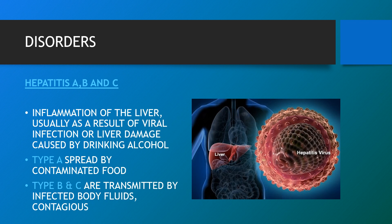Hepatitis A, B and C is an inflammation of the liver, usually as a result of viral infection or liver damage caused by drinking alcohol. Hepatitis A is usually spread by contaminated food. The most significant difference between Hepatitis B and Hepatitis C is that people may get Hepatitis B from contact with bodily fluids of a person who has the infection, while Hepatitis C usually only spreads through blood-to-blood contact.